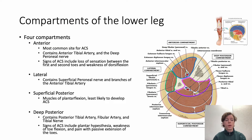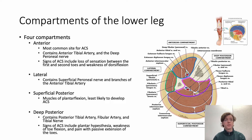Considering the compartments of the lower leg: it has four compartments. The anterior compartment is the most common site for acute compartment syndrome and contains the anterior tibial artery and deep peroneal nerve. Signs of ACS can include loss of sensation between the first and second toes and weakness of dorsiflexion, consistent with injury to the deep peroneal nerve. The lateral compartment contains the superficial peroneal nerve and branches of the anterior tibial artery. The superficial posterior compartment contains muscles of plantar flexion and is the least likely to develop ACS. The deep posterior contains the posterior tibial artery, fibular artery, and tibial nerve; signs here include plantar hypoesthesia, weakness of toe flexion, and pain with passive extension of the toes.